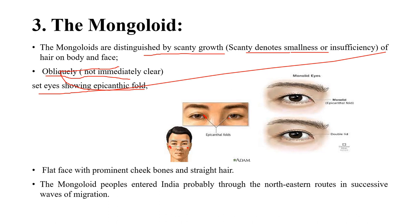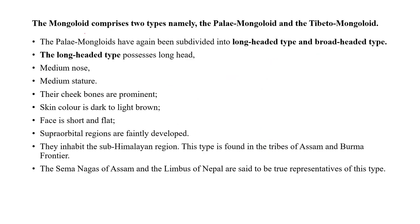Mongoloids have a flat face with prominent cheekbones, and most have straight hair. Mongoloid peoples entered India probably through the northeast route, which is why we see many Mongoloid races in the northeastern part of the country.